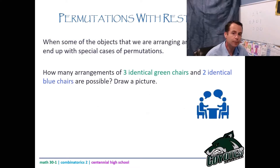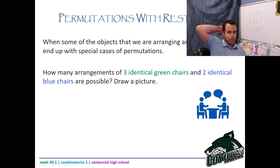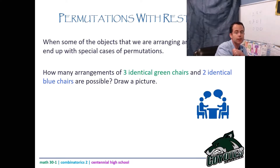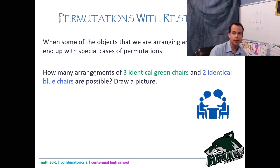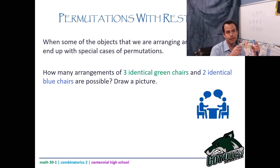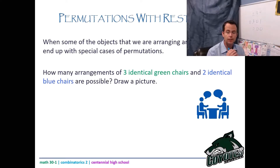This next part is a little investigation — pause and try it. When some objects we are arranging are identical, we end up with special cases of permutations. How many arrangements of three identical green chairs and two identical blue chairs are possible? Pause and draw as many different combinations as you can. The key is that they must be different arrangements.